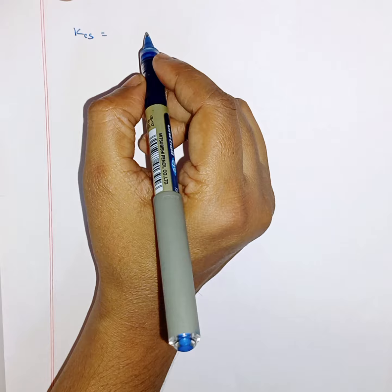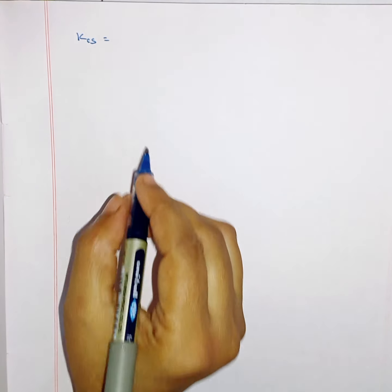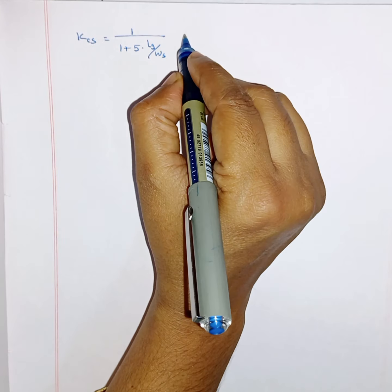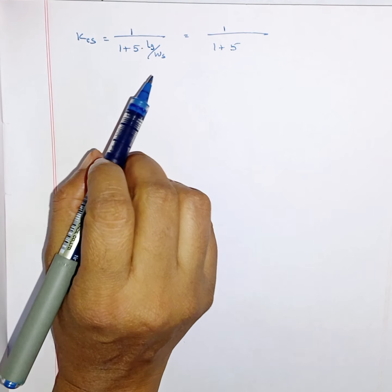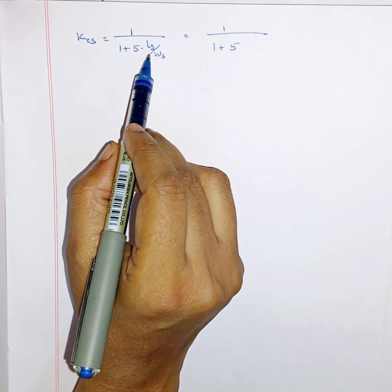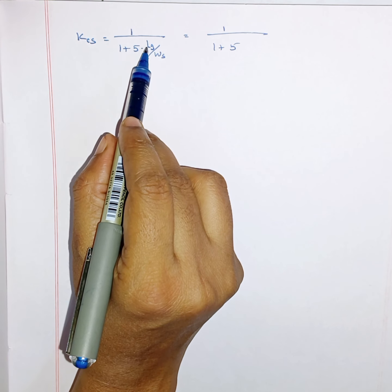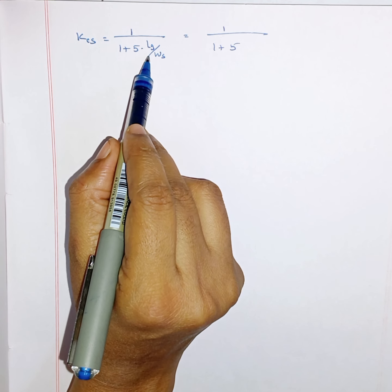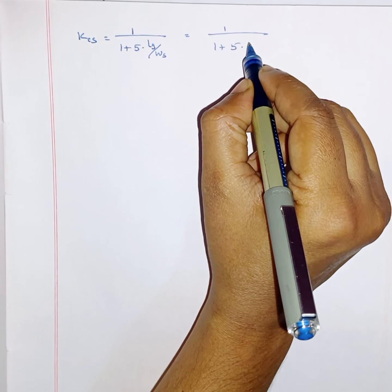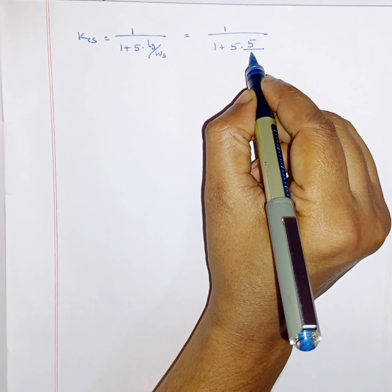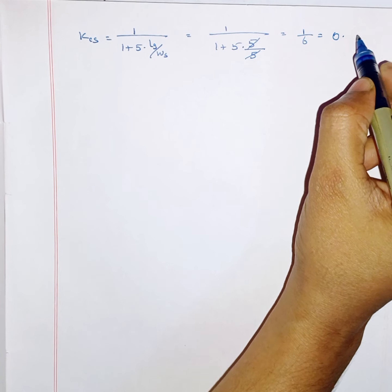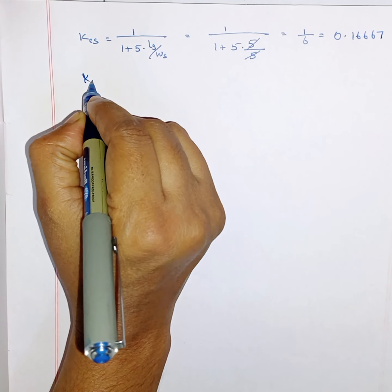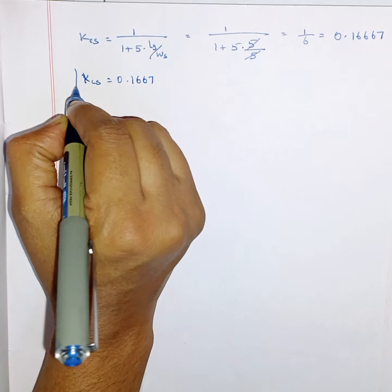KCS is equal to 1 divided by (1 plus 5 times LG divided by width of the slot). LG is in mm and WS is also in mm, so no conversion needed. Substituting: 1 divided by (1 plus 5 times 5 mm divided by 5 mm). Both 5s cancel giving 1 divided by 6, so KCS equals 0.1667.